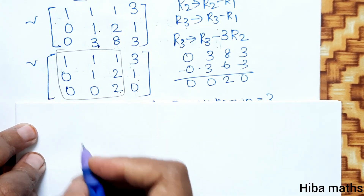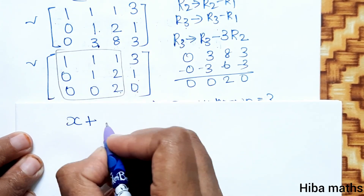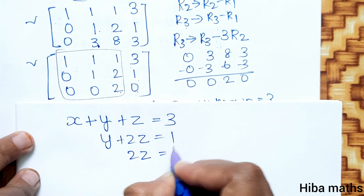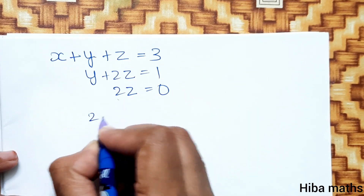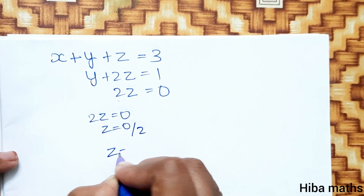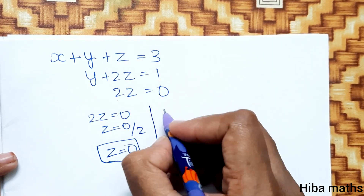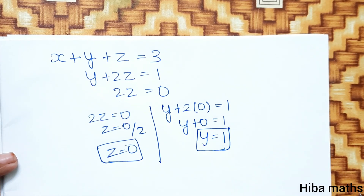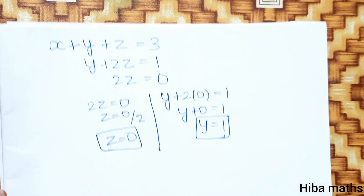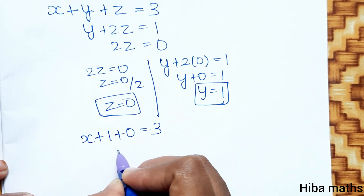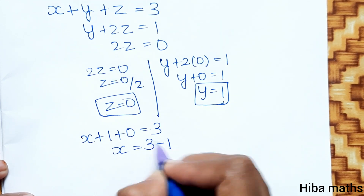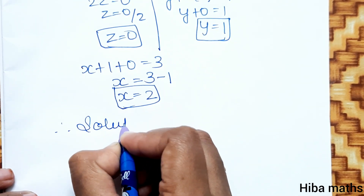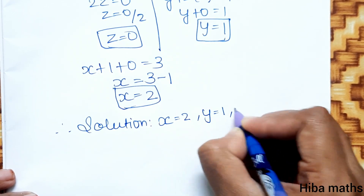Now we solve by back-substitution. From the echelon form: x + y + z = 3, y + 2z = 1, and 2z = 0. From 2z = 0, z = 0. Substituting into y + 2(0) = 1 gives y = 1. Substituting x + 1 + 0 = 3 gives x = 2. Therefore the unique solution is x = 2, y = 1, z = 0.